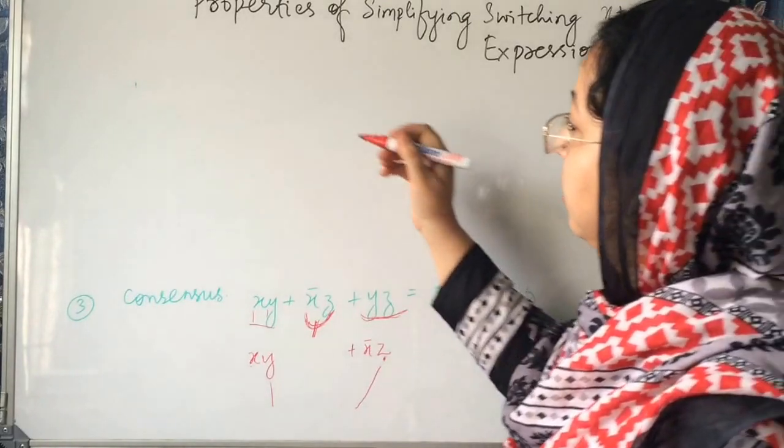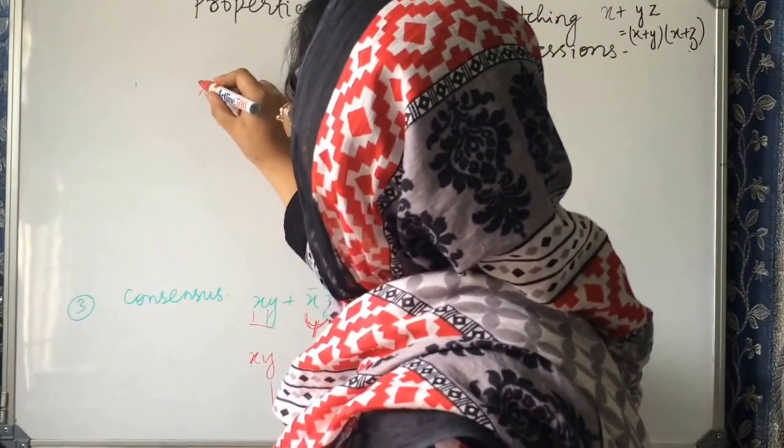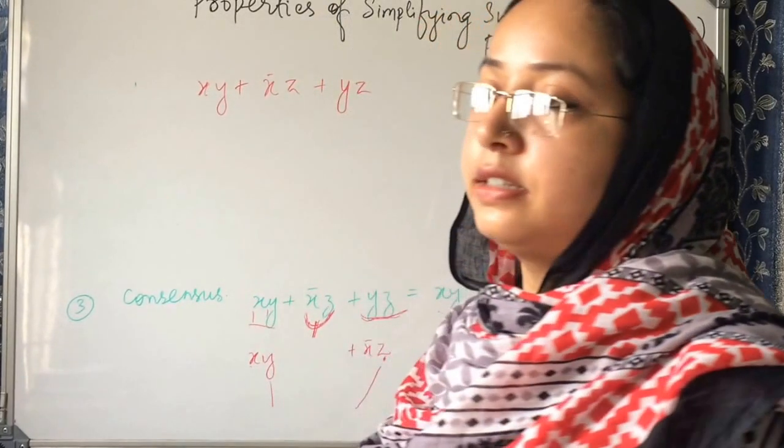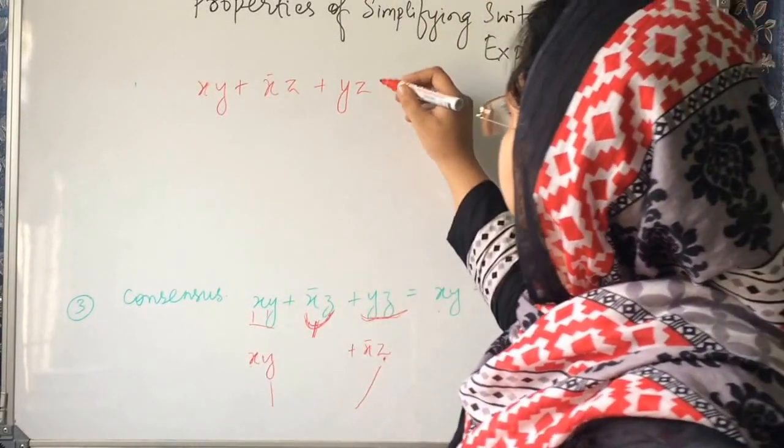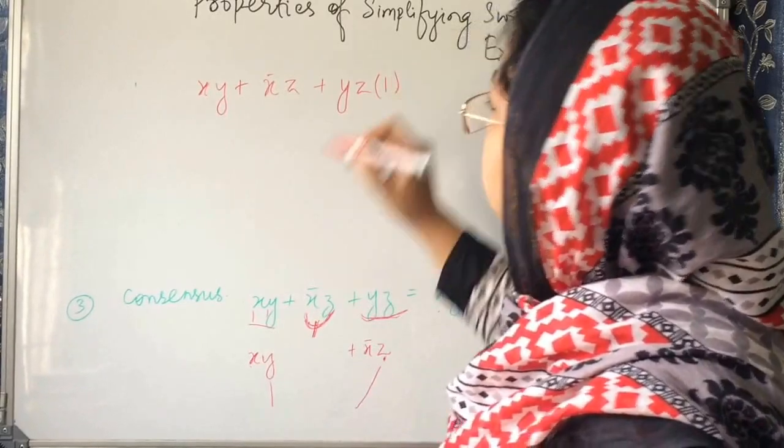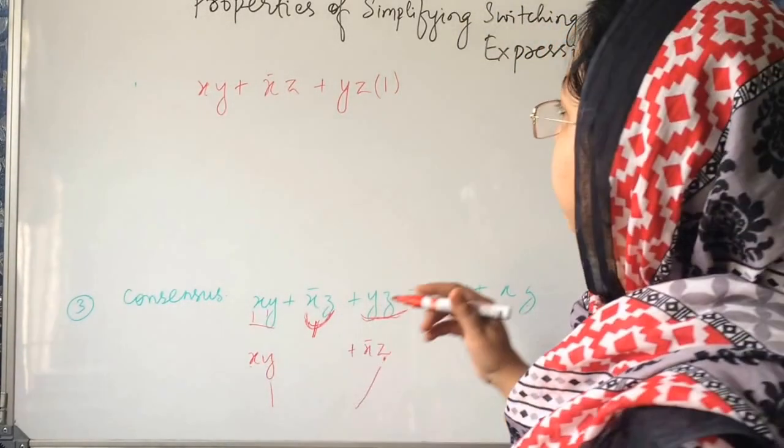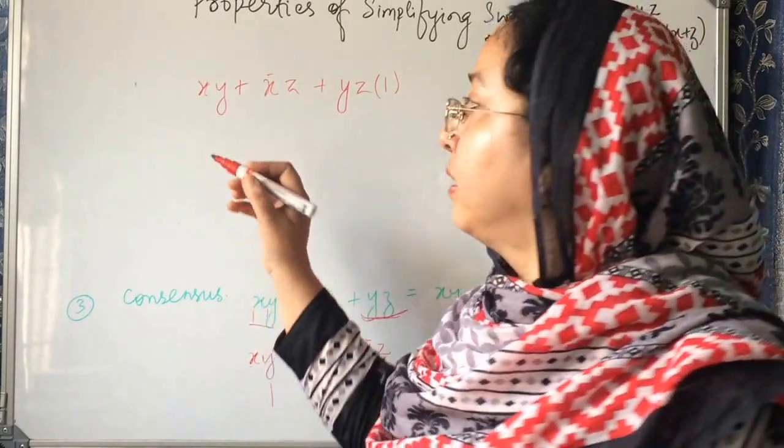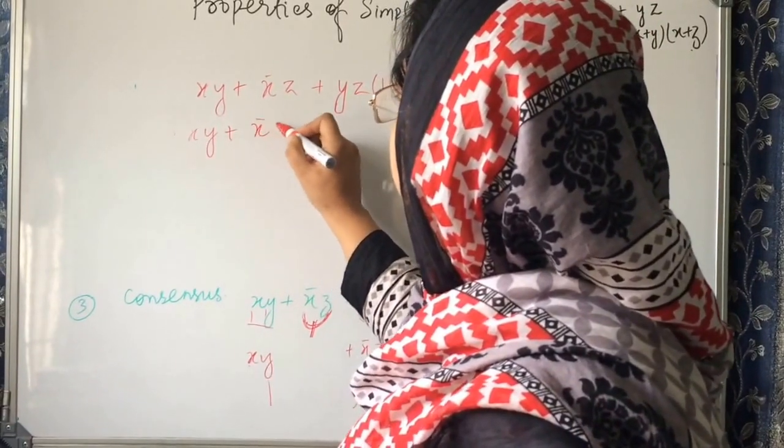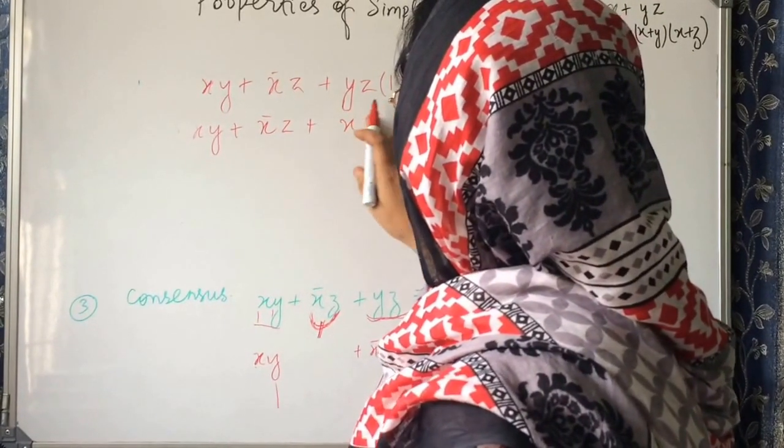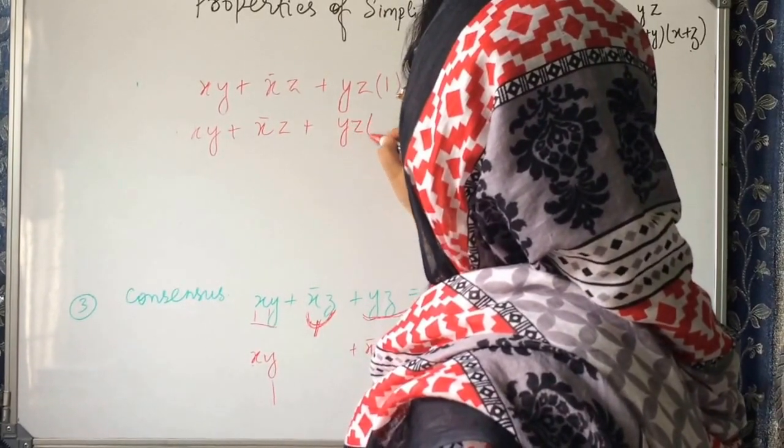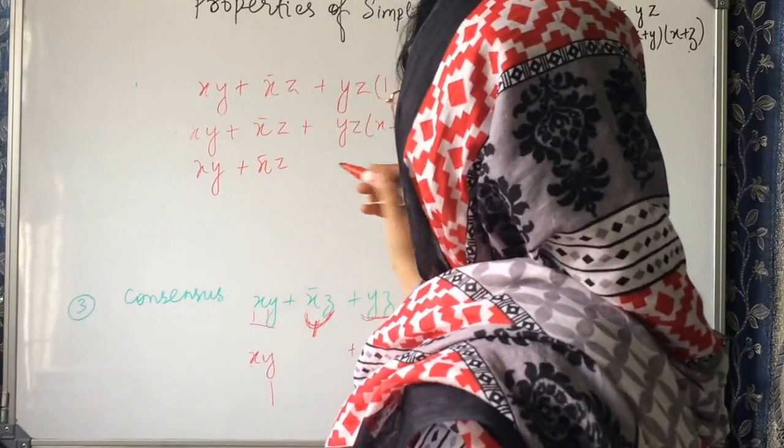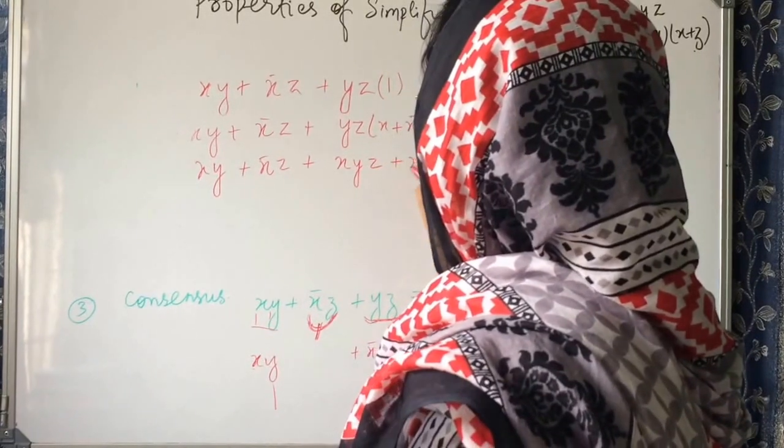And I will prove it here. So, xy plus x bar z plus yz. Let's take LHS. What I am doing? I am multiplying this with 1. And in place of 1, I can use x plus x bar. xy plus x bar z plus yz into x plus x bar.